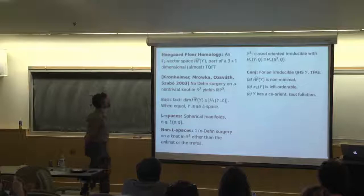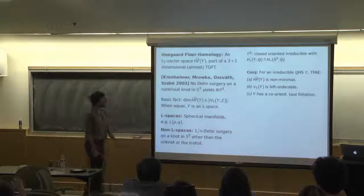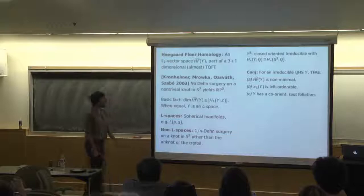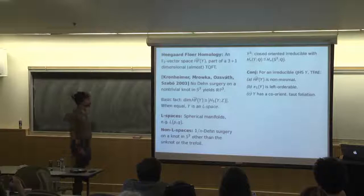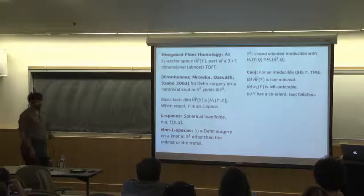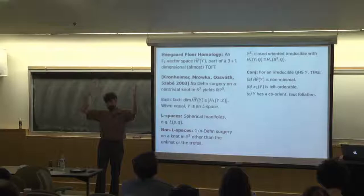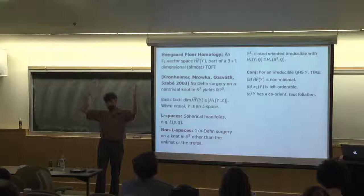What is Heegaard Floer homology? I'm going to say almost nothing — literally nothing — about how it's defined. All we need to know today is that the simplest version, called HF-hat, is just a finite-dimensional vector space over the field of two elements. It's part of a three-plus-one dimensional TQFT — not quite a TQFT, but it's the last talk, so no technicalities. It associates a vector space to a three-manifold, and if you have a cobordism between two three-manifolds, so a four-manifold, you get a map between the associated vector spaces.